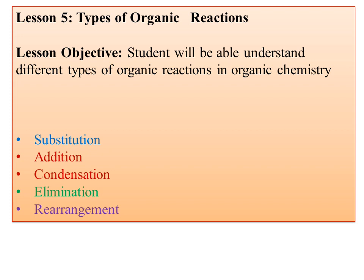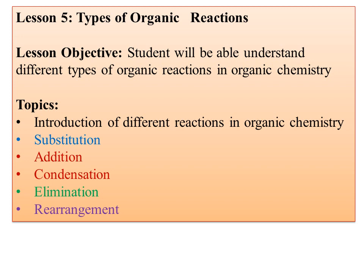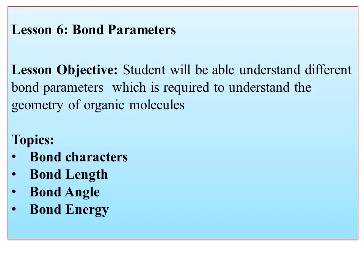Lesson number five covers different types of organic reactions. These may be substitution reactions, addition reactions, condensation reactions, elimination reactions, or rearrangement reactions. Even though there are millions of organic compounds, these — along with oxidation and reduction — are the five main types of reaction mechanisms that take place in organic compounds. The student will be able to understand the different types of reactions depending upon the nature and the cleavage of the covalent bond that takes place in that particular molecule.